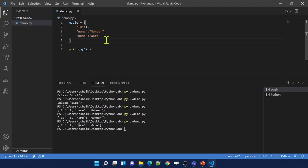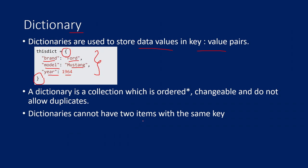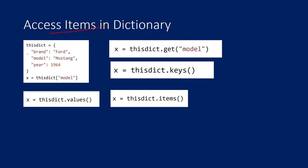So going to the presentation: dictionary collection is going to be ordered, it is changeable, and it will not allow duplicates - dictionaries cannot have two items with the same key. Now, how to access any item from the dictionary? If I have a dictionary with keys called brand, model, and year, and I want to access the model key value, I can use index syntax with square brackets and pass my key name.